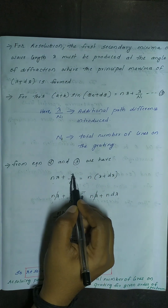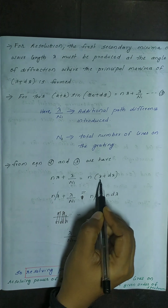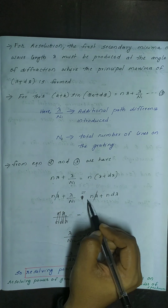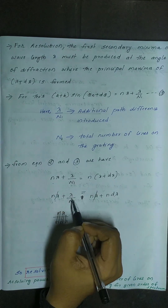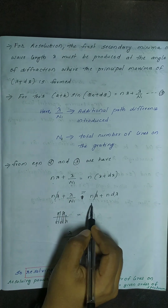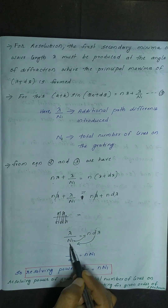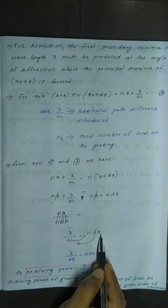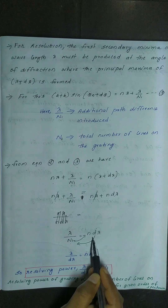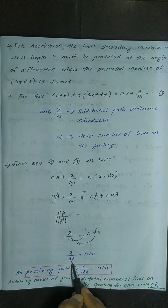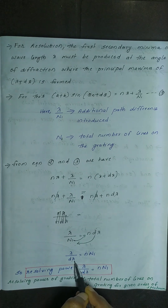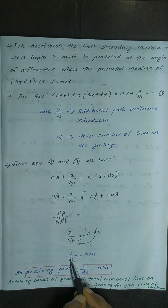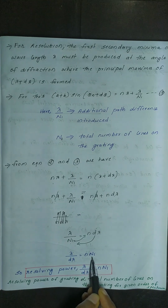From equations 2 and 3, we write: n lambda + lambda / N1 = n(lambda + d lambda). Expanding: n lambda + n d lambda = n lambda + lambda / N1. Cancelling n lambda from both sides: lambda / N1 = n d lambda, therefore lambda / d lambda = n N1.